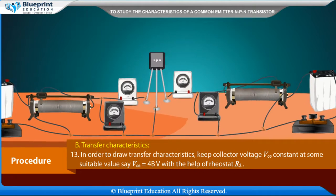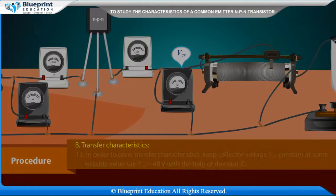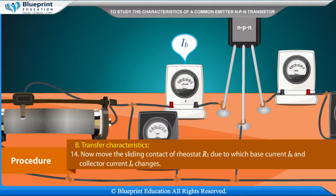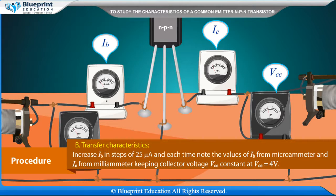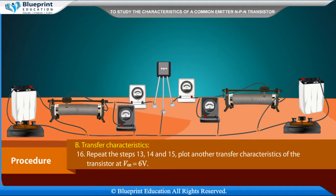Transfer characteristics: To draw transfer characteristics, keep collector voltage VCE constant at a suitable value, say VCE equal to 4 volts, using rheostat R2. Move the sliding contact of R1 to change base current IB and collector current IC. Increase IB in steps of 25 microamperes, each time noting IB from the microammeter and IC from the milliammeter. Plot a graph between IB and IC for transfer characteristics at VCE equal to 4 volts, then repeat for VCE equal to 6 volts.